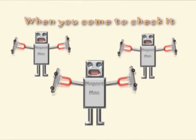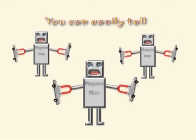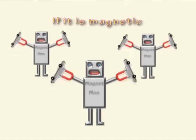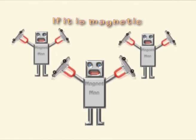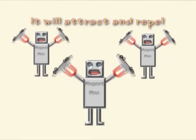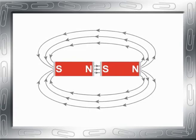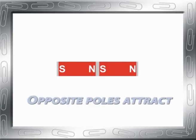When you come to check it, you can easily tell. If it is magnetic, it will attract and repel. Opposite ends of a magnet always pull together.